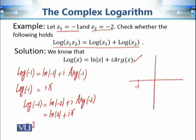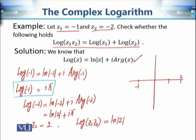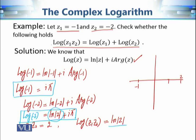Now z1·z2 = (−1)(−2) = 2. The number 2 lies on the positive real axis, so its principal argument is 0, and therefore Log(z1·z2) = ln(2). When we add Log(−1) + Log(−2), we get ln(2) + 2πi, but Log(2) = ln(2). So the two sides differ by 2πi — we get an extra i·2π on the right-hand side that doesn't appear on the left.